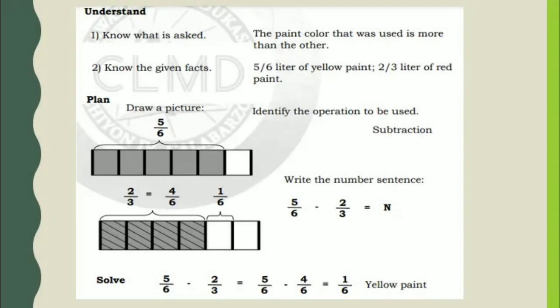Let's solve the problem. First, know what is asked. The paint color that was used more than the other. Next, know the given facts. 5 sixths liter of yellow paint and 2 thirds liter of red paint.